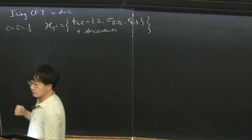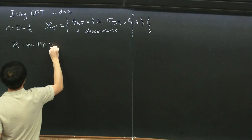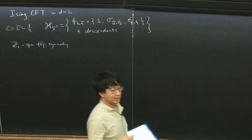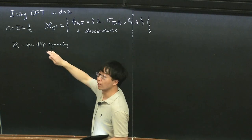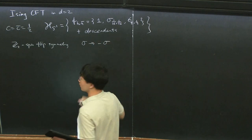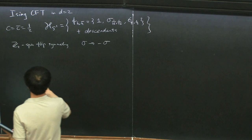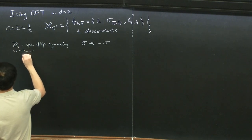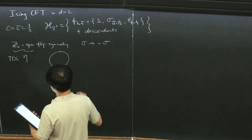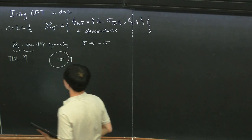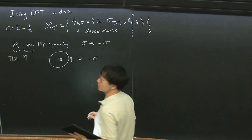This CFT has a famous symmetry—the Z2 spin-flip symmetry. All of the operators in this Hilbert space are even under this symmetry, except for the sigma operator and its Virasoro descendants. The sigma operator and their Virasoro descendants are odd under the Z2 symmetry. Let's call this symmetry generated by a topological defect line eta. This means that when eta acts on the local operator sigma by enclosing it, we can shrink this loop and obtain just sigma with an opposite sign at the same location.